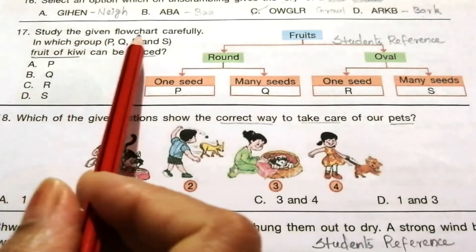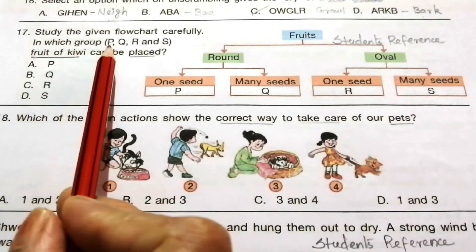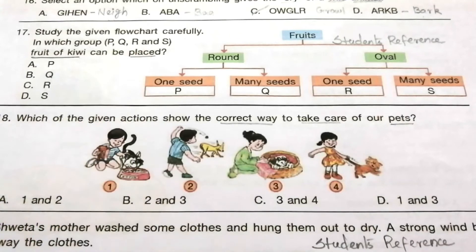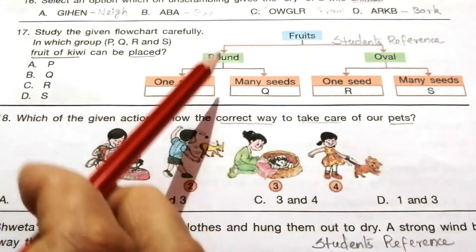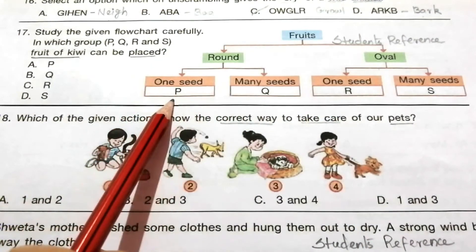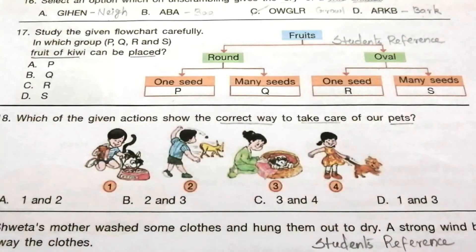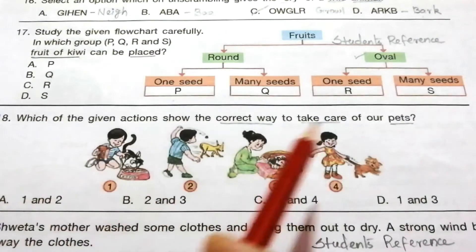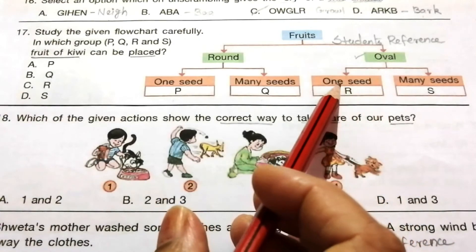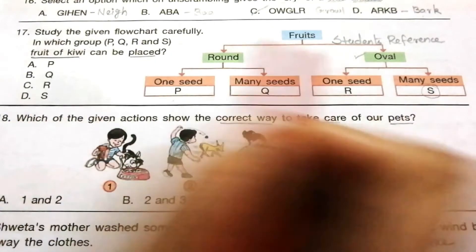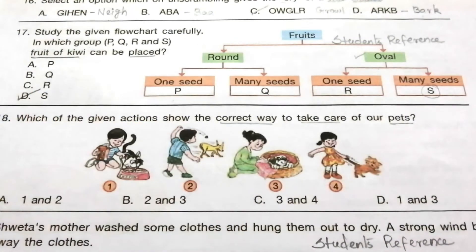Question 17: Study the given flow chart. In which group — P, Q, R, or S — can the fruit kiwi be placed? The chart branches: Fruits → Round or Oval; then 1 seed (P/R) or Many seeds (Q/S). Kiwi is oval in shape and has many seeds, so the answer is D — S.